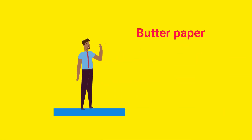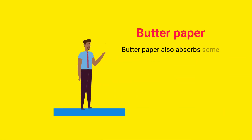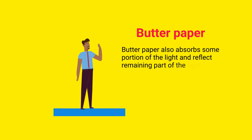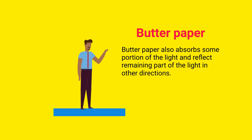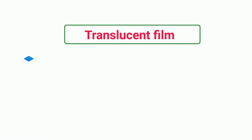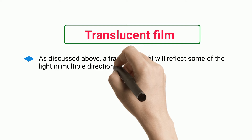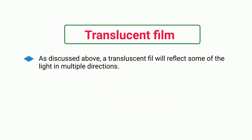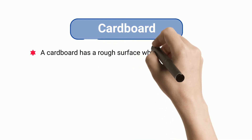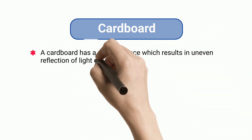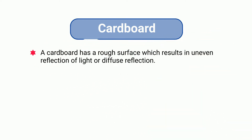Butter paper: butter paper also absorbs some portion of the light and reflects the remaining part of the light in other directions. Translucent film: a translucent film will reflect some of the light in multiple directions. Cardboard: a cardboard has a rough surface which results in uneven reflection of light, or diffuse reflection.